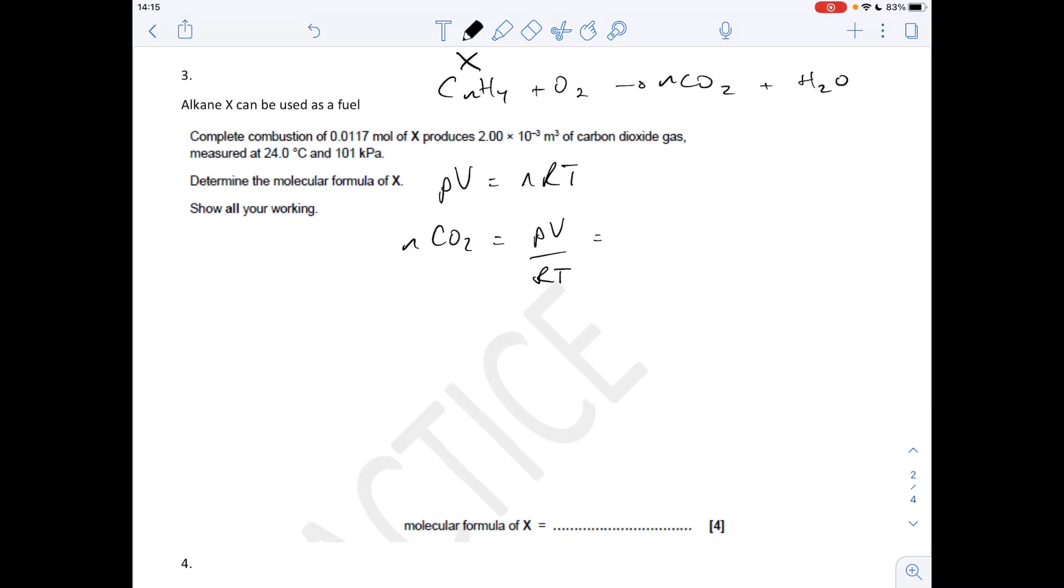I've drawn up the ideal gas equation. I've rearranged it for moles of CO2, so it's PV over RT. We've got 101 kilopascals - we've got to have things in pascals for the ideal gas equation, so that's 101,000 multiplied by the volume. It's in the right unit, so that's good: 2 times 10 to the minus 3 meters cubed. Divided by RT, so 8.314 is R, temperature is 297.